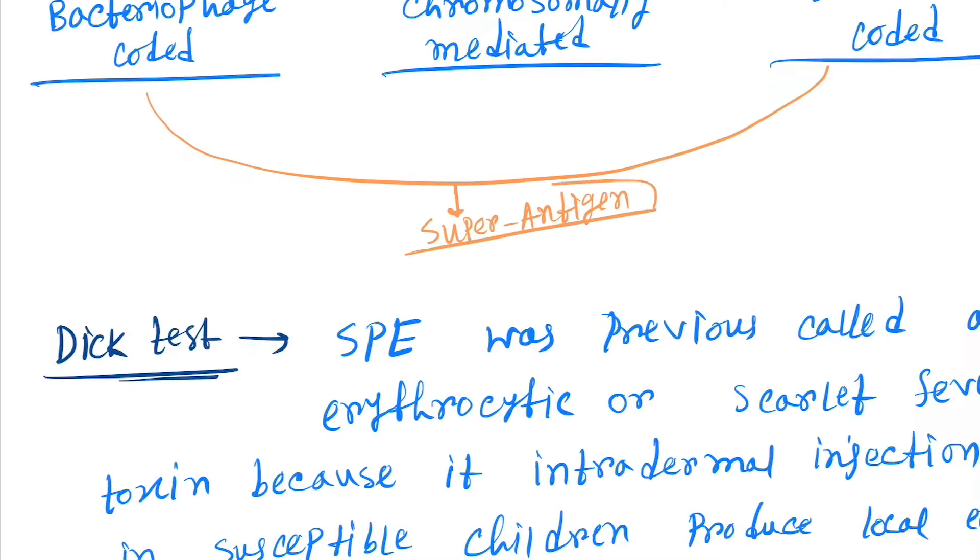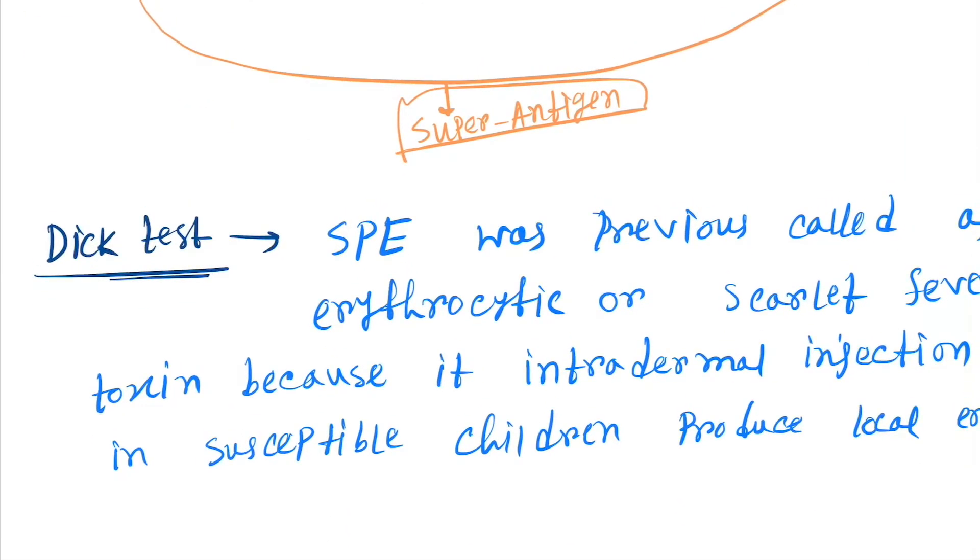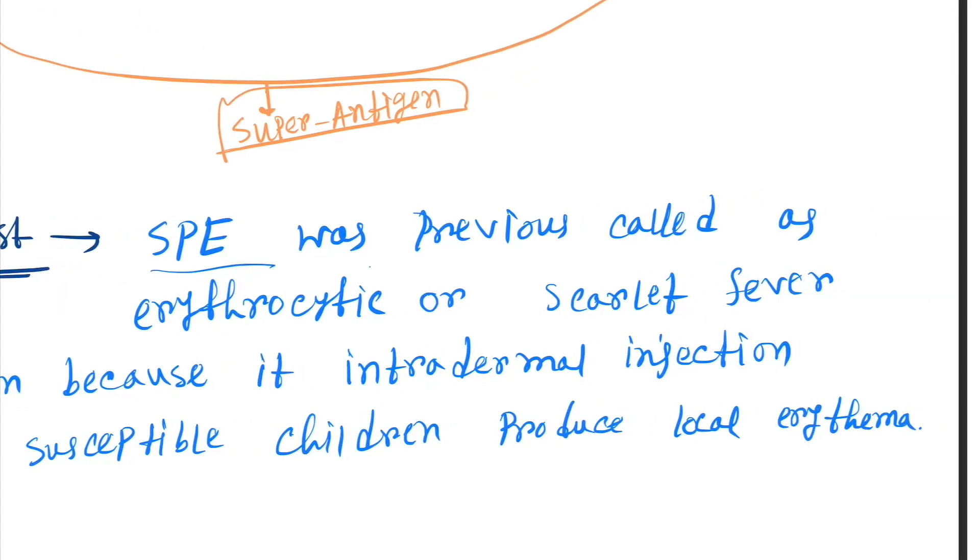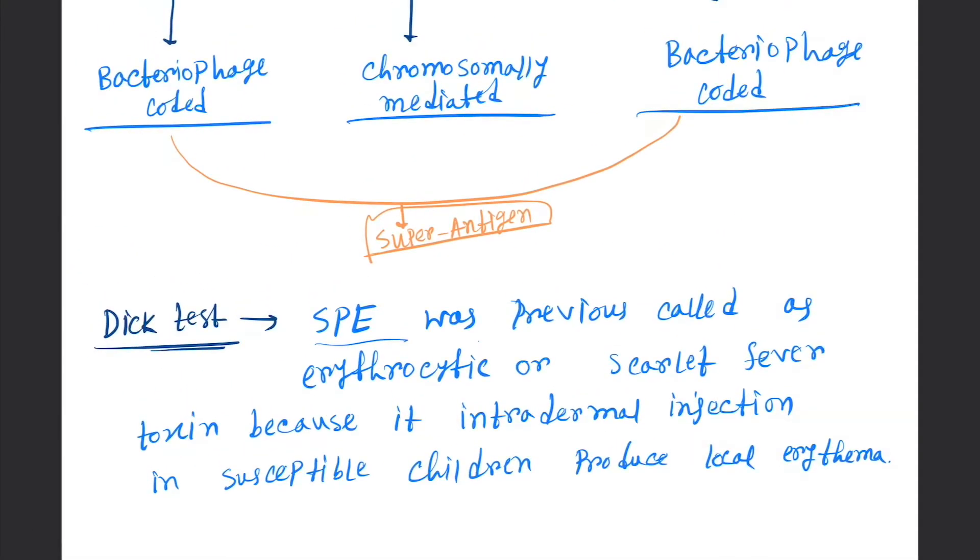Now Dick test, you have to remember a thing. SPE was previously called erythrogenic or scarlet fever toxin because intradermal injection in susceptible children produces local erythema.